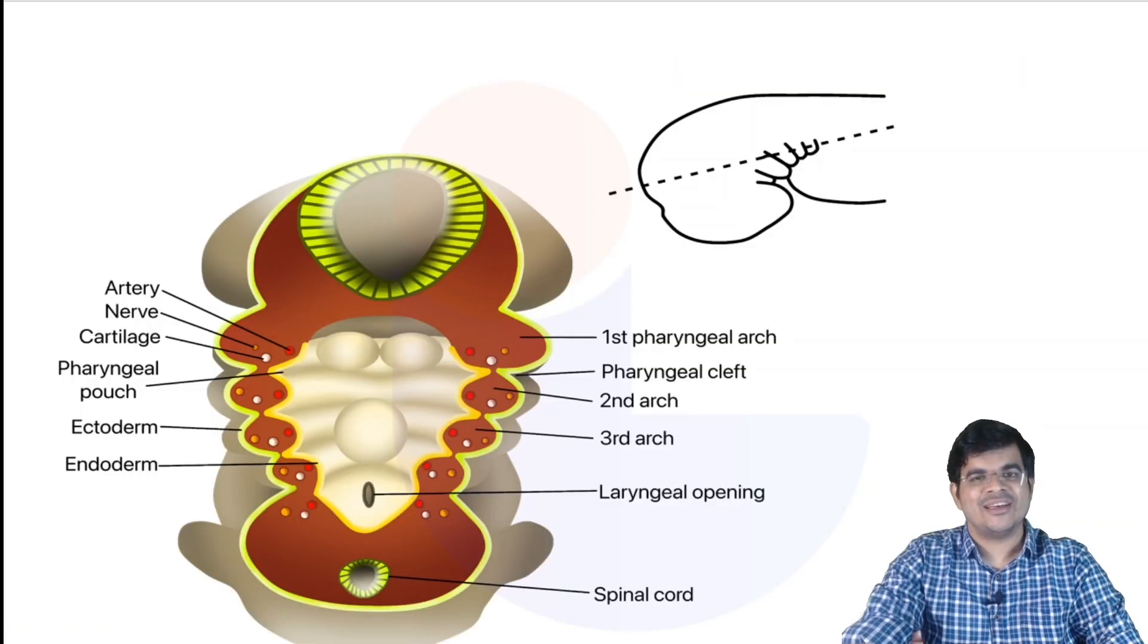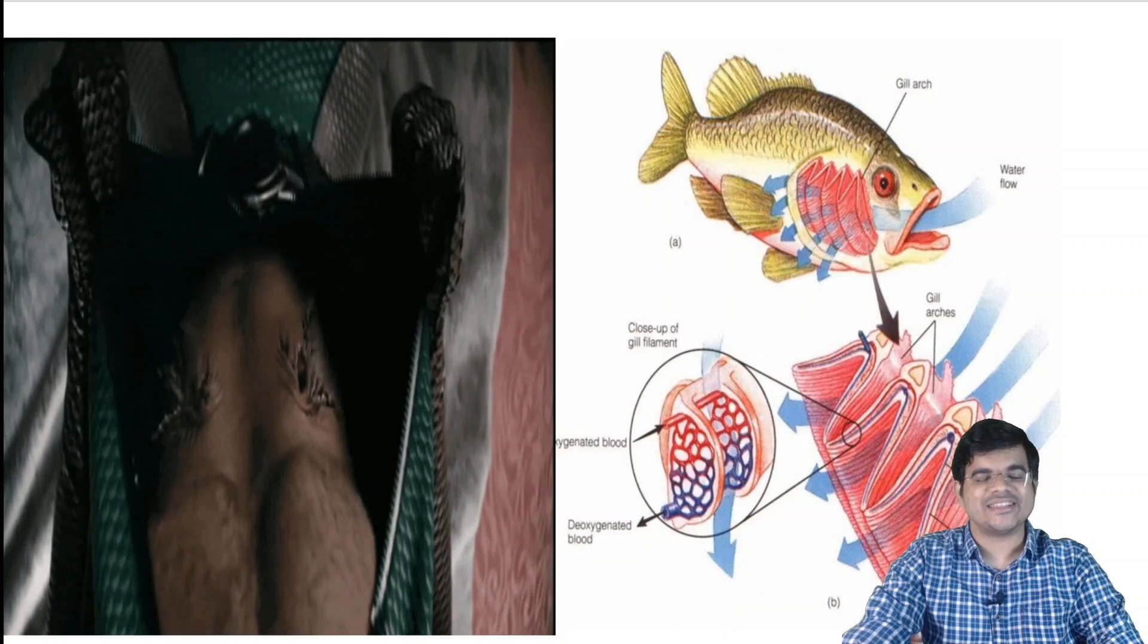Pinna develops from the first and second branchial arches. The branchial arches are lined externally by the ectodermal cleft and internally by the endodermal pouch and resemble the gills of a fish, hence giving it its name.